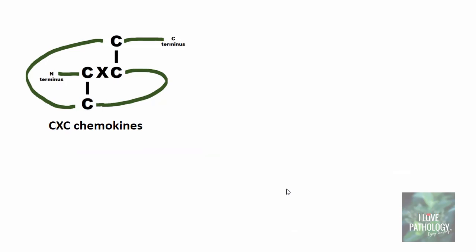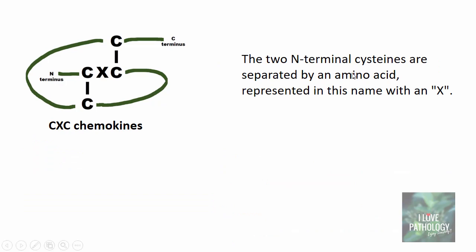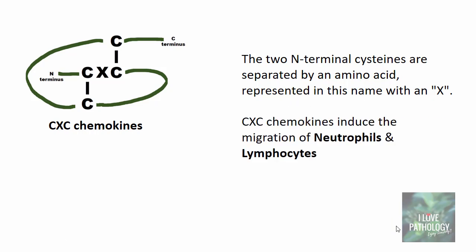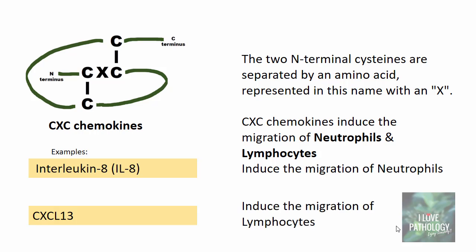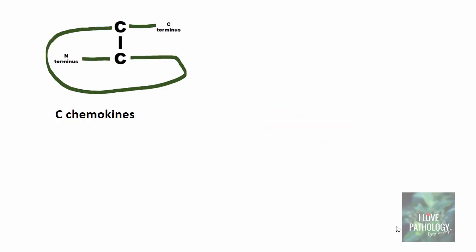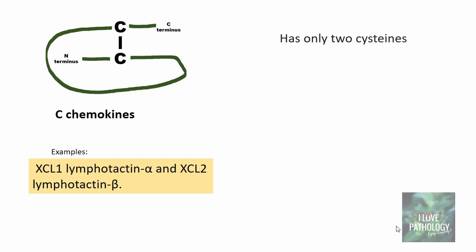CXC chemokines, where the two N-terminal cysteines are separated by an amino acid represented by X, induce the migration of neutrophils and lymphocytes. Remember: CC chemokines induce migration of monocytes, whereas CXC chemokines induce migration of neutrophils and lymphocytes. Examples of CXC chemokines are interleukin 8, which induces migration of neutrophils, and CXCL13, which induces migration of lymphocytes. C chemokines have only two cysteines, with examples being lymphotactin alpha and lymphotactin beta, which induce the migration of lymphocytes.